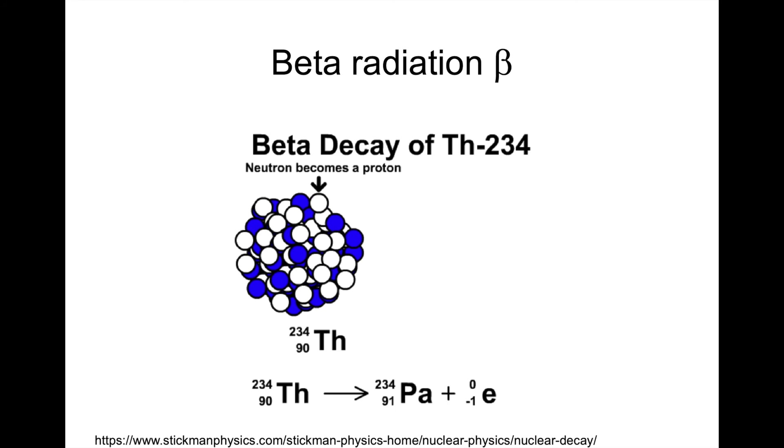We have the neutron that becomes a proton, and there's a beta particle, very similar to an electron, that gets expelled. If you noticed, the color of the particle changes because the neutron becomes a proton—white to blue.